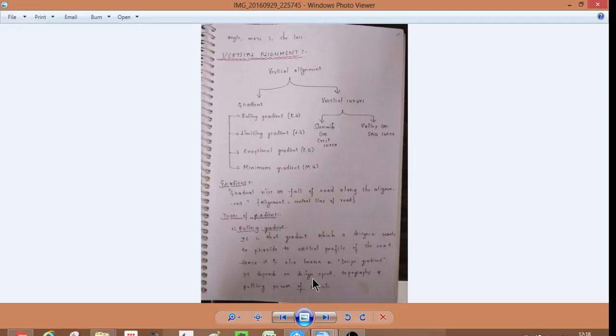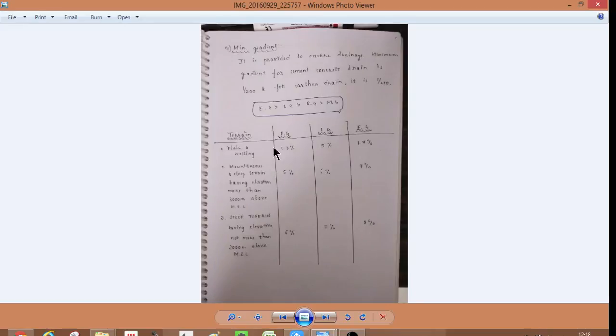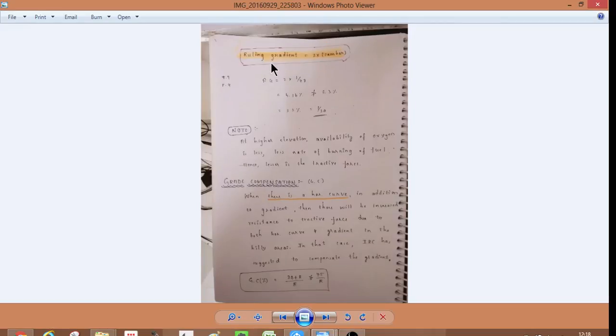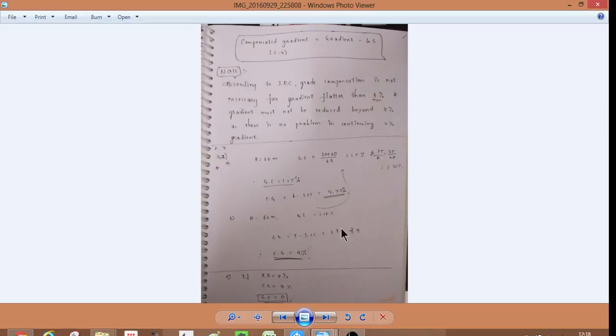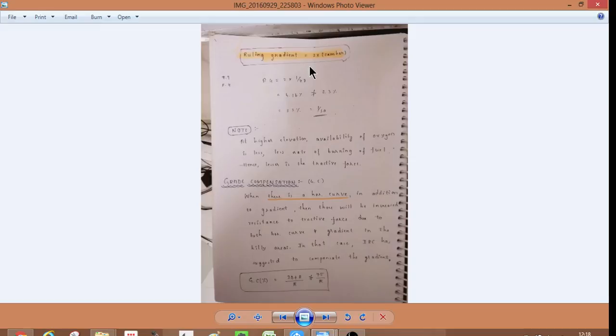Gradient, ruling, limiting, exceptional minimum. This is 4 and 4. Exceptional, limiting, ruling minimum. So, this is a table. So, ruling gradient here is a camber. Grade compensation is important. This is a vertical curve. That is a horizontal curve. But the horizontal curve is a gradient. So, this is a vertical curve. Grade compensation is 30 plus R by R. That is 75R by R. So, this is a node. So, this is ruling gradient minus grade compensation. That is 30 plus R divided by R.